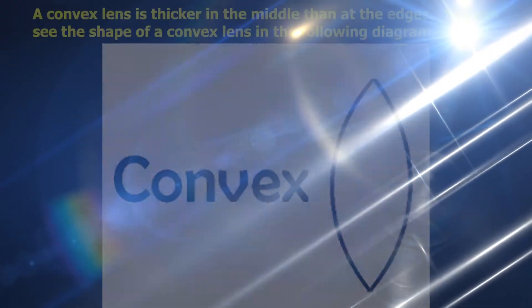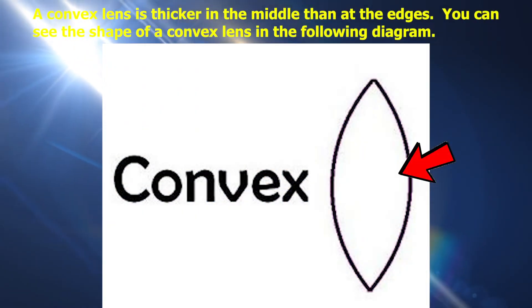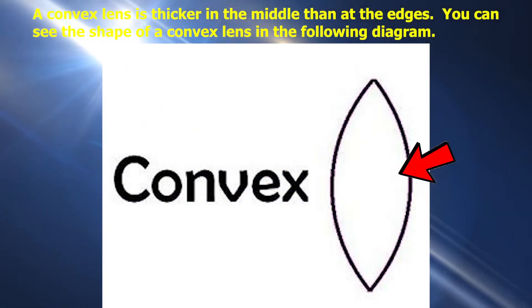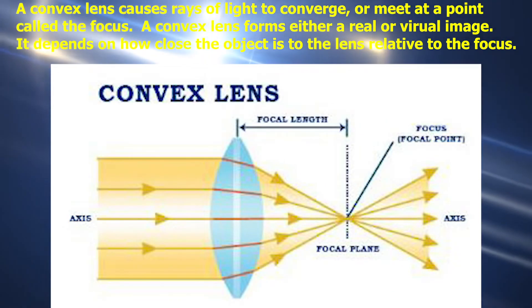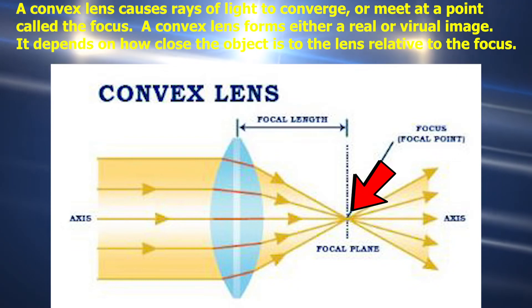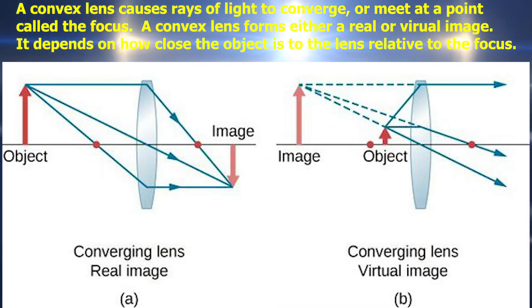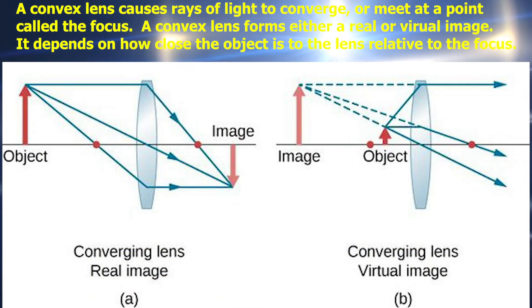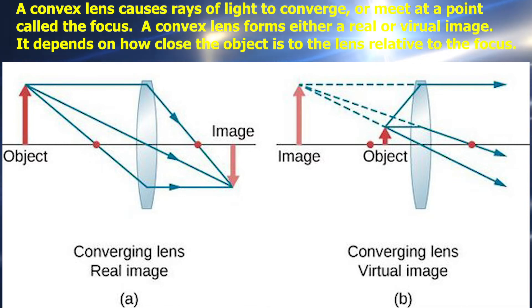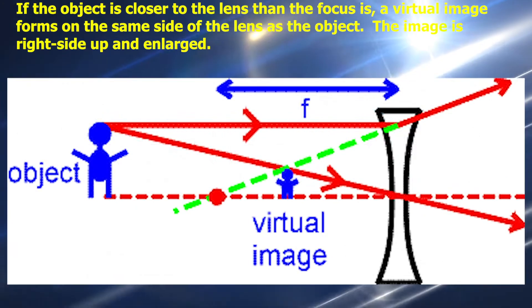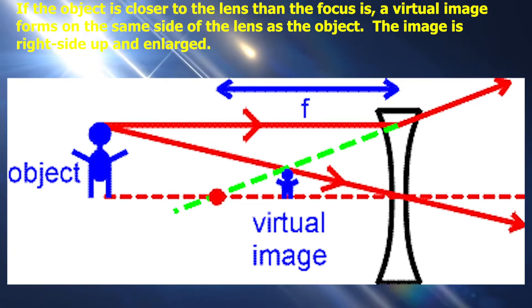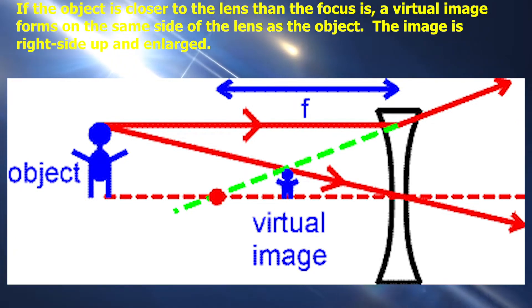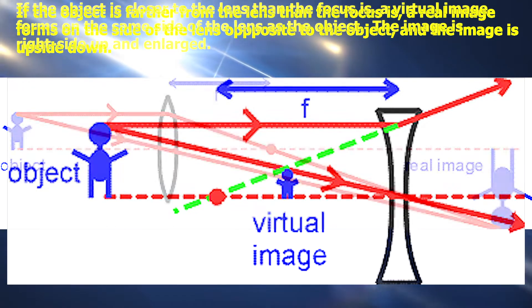Now let's take a look at convex lenses. A convex lens is thicker in the middle than at the edges. You can see the shape of a convex lens in the following diagram. A convex lens causes rays of light to converge or meet at a point called the focus. A convex lens forms either a real or virtual image depending on how close the object is to the lens relative to the focus. If the object is closer to the lens than the focus is, a virtual image forms on the same side of the lens as the object. The image is right side up and enlarged.